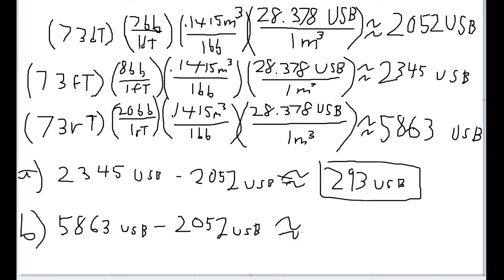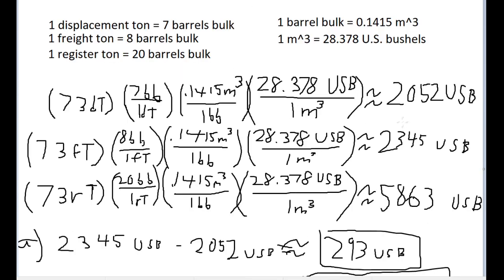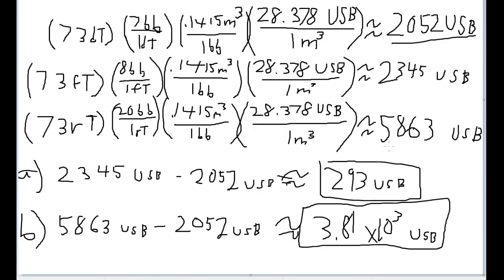And I'm going to round to three significant figures here because this is all more or less estimation. And it gives us an answer of about 3.81 times 10 to the power of 3 U.S. bushels. And that is going to be the difference between the number of bushels they want to have and how many bushels we could possibly mistakenly ship off instead.